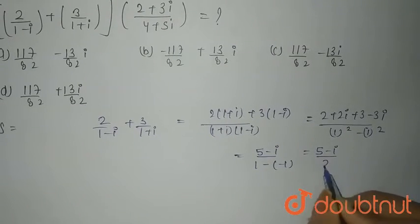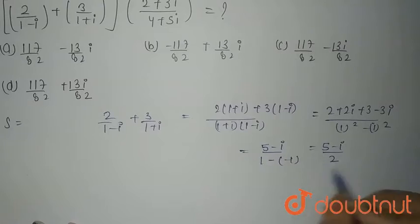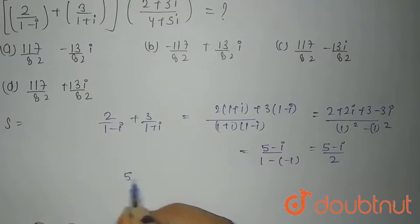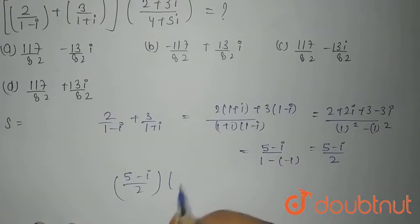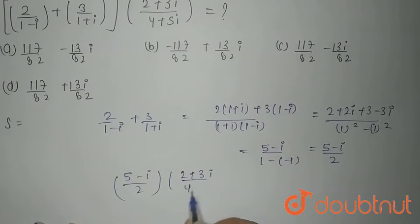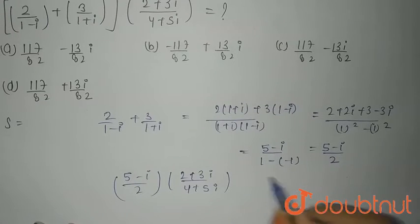It comes out to be 5 minus iota divided by 2. Now if this multiplied by this, that is nothing but 5 minus iota divided by 2 into 2 plus 3 iota divided by 4 plus 5 iota.